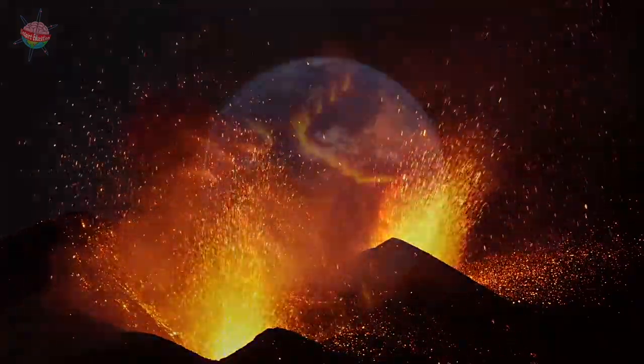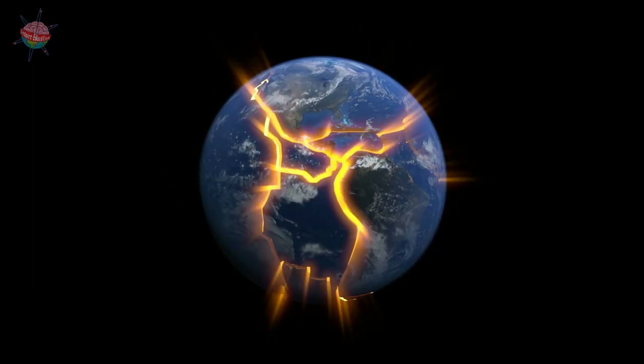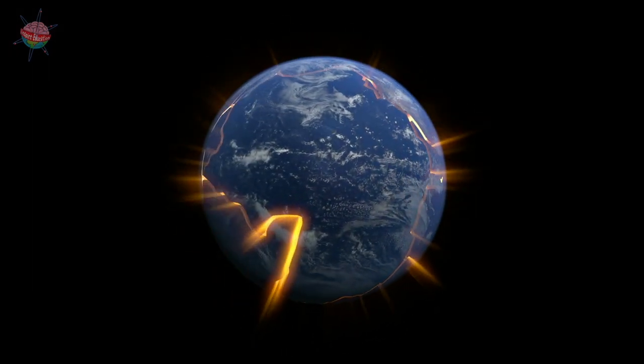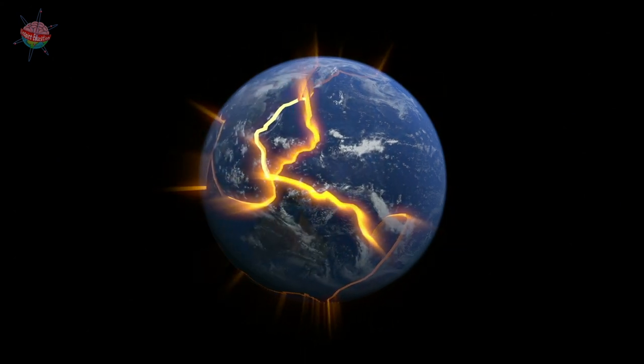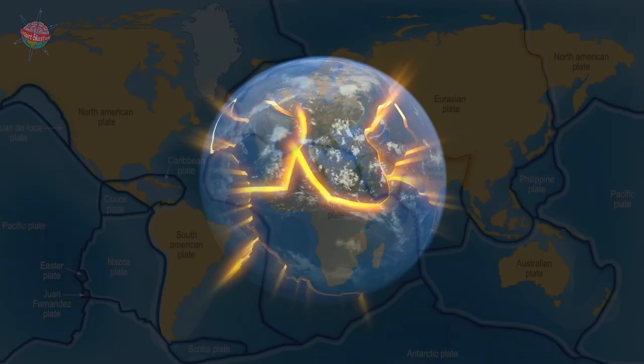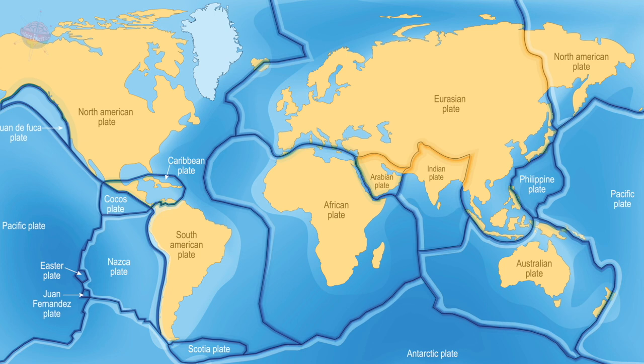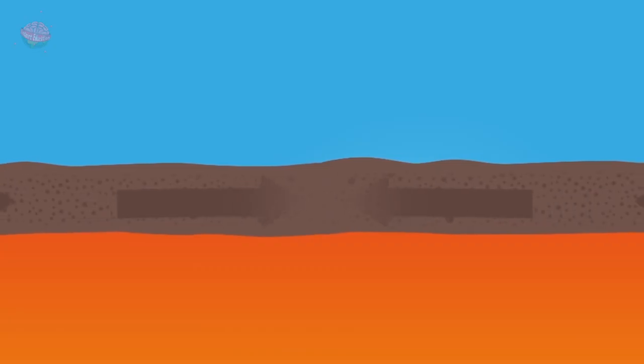The Earth's outer crust is made up of huge slabs of rock called tectonic plates. These plates are like pieces of a giant jigsaw, all fitting together. However, the plates can move about.